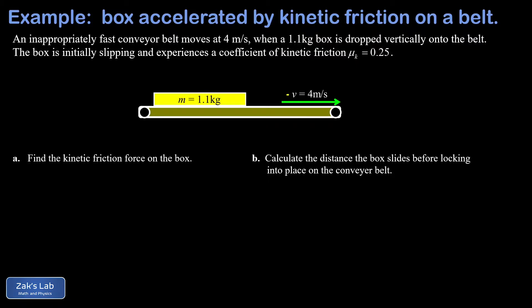Eventually the box goes fast enough to match the belt's speed. In part b, we're asked how far it slides before locking into place. We're given the coefficient of kinetic friction. In part a, we're asked for the kinetic friction force on the box during the slipping phase.